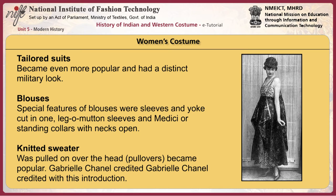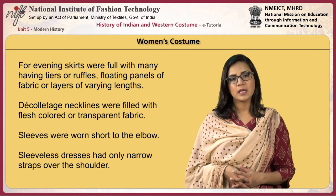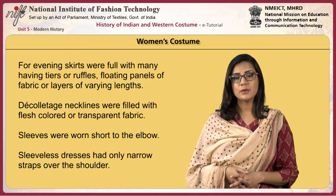Tailored suits became even more popular and had a distinct military look. Special features of blouses included sleeves and yoke cut in one, leg-o'-mutton sleeves, and Medici or standing collars with open necks. Knitted sweaters that pulled on over the head, or pullovers, became popular — Gabrielle Chanel is credited with this introduction. For evening, skirts were full with many having tiers or ruffles, floating panels of fabric, or layers of varying lengths. Décolletage necklines were filled with flesh-coloured or transparent fabric. Sleeves were worn short to the elbow. Sleeveless dresses had only narrow straps over the shoulder.